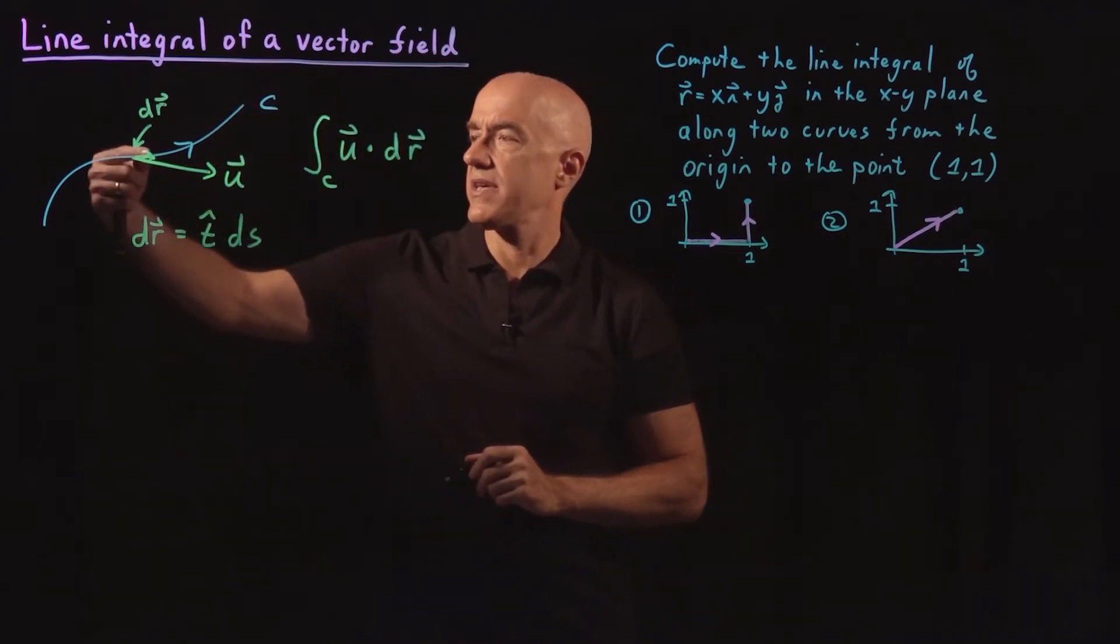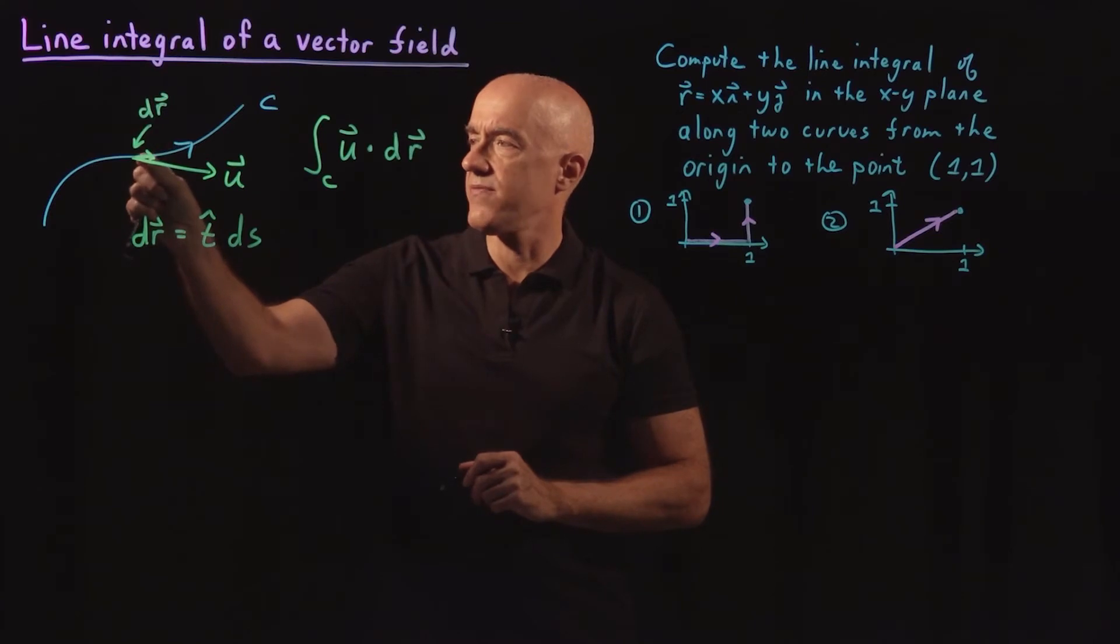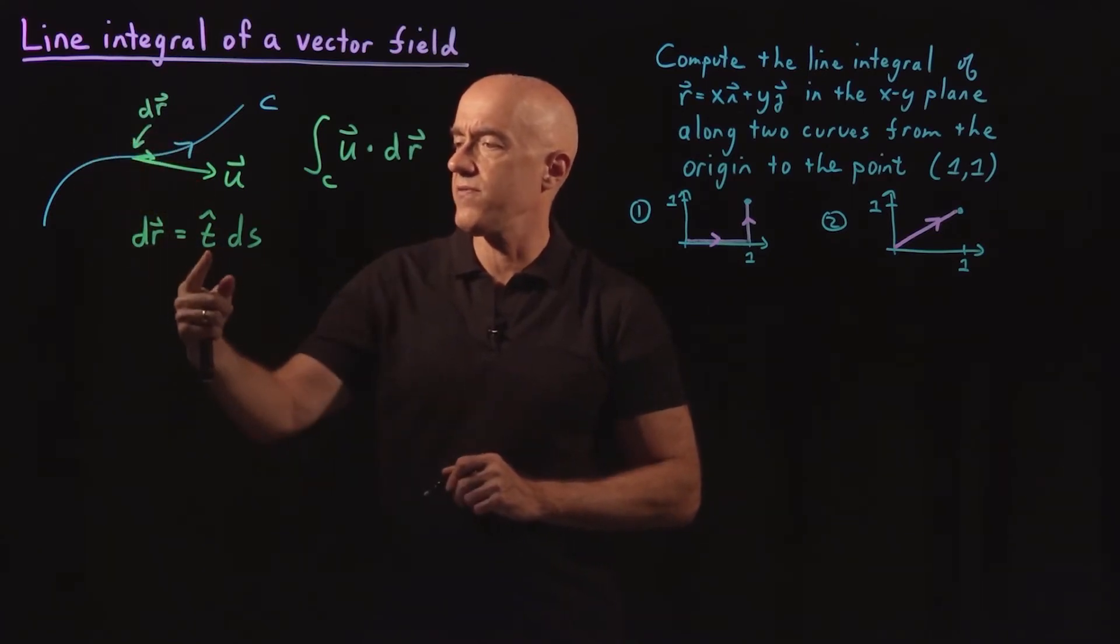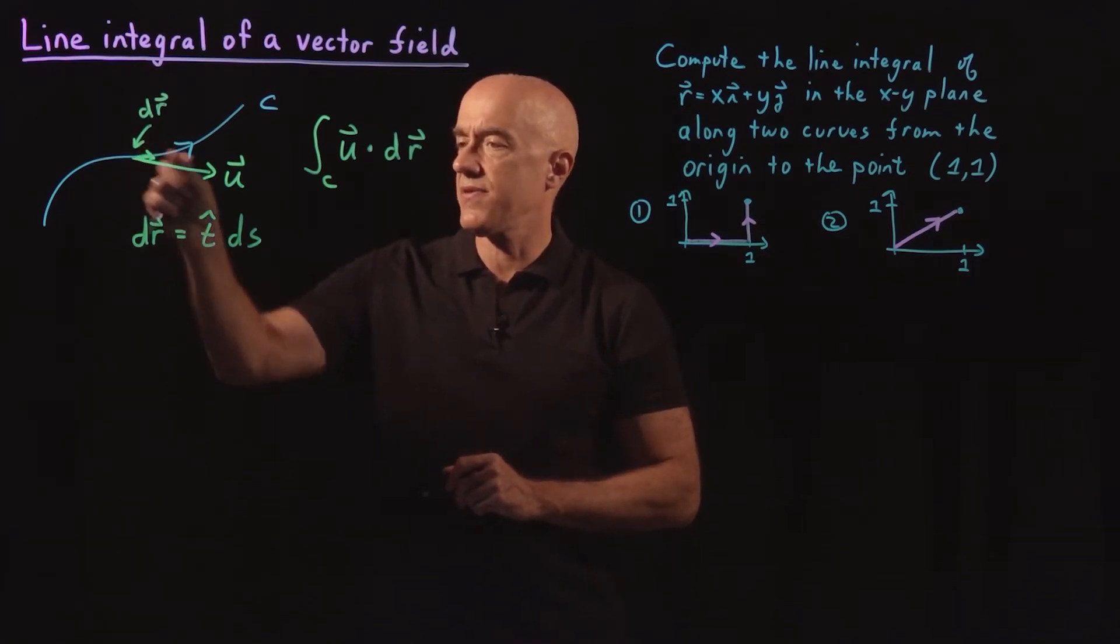So we can define this vector DR of the small element as in the direction of the curve with the unit vector T hat, the tangent unit vector, times some length DS.